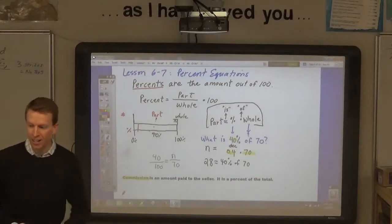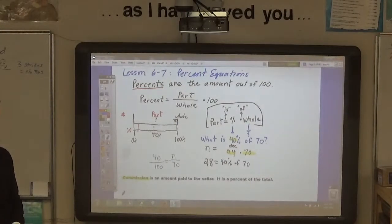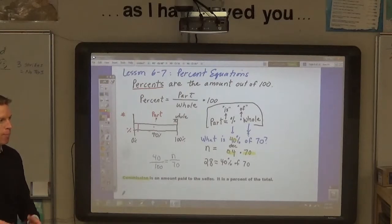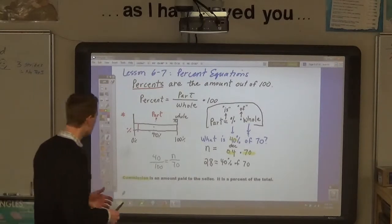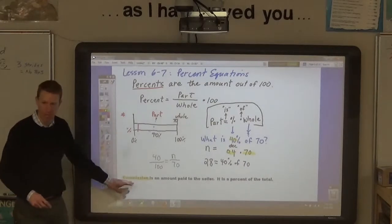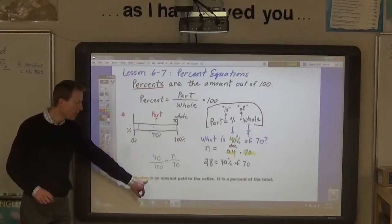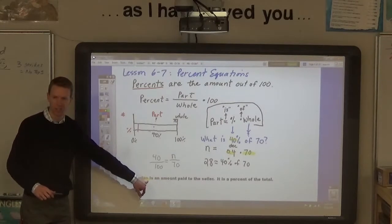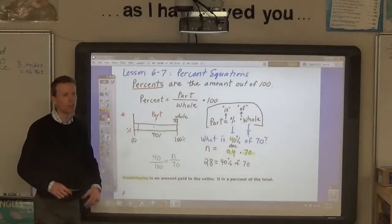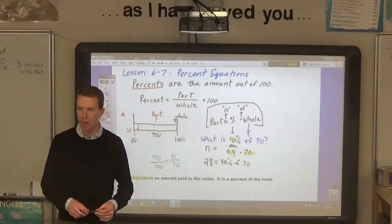You can make a great living by learning how to sell things. And most salesmen get paid using some sort of commission basis. So, commission is an amount that's paid to the seller. Anybody who is a realtor gets paid by commission.